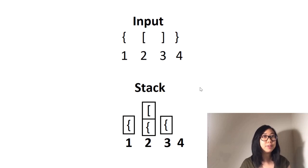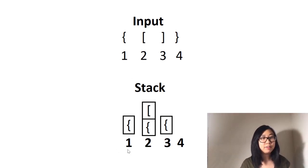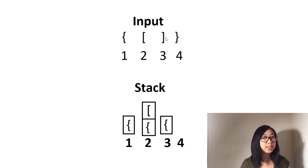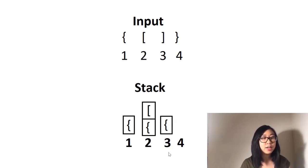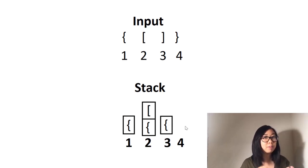A stack data structure is basically a list where the last item that was put into the stack will be the first item that gets returned. So if the string is an opening character we will add that to our stack. And if the string is a closing character we will pop our current stack, see if the character in the popped stack and the character in our input match. If they match, the string is still valid; if they don't match, it is not valid and we return false. If it's still valid we look at all the other items and do the same thing. In the end, if the stack is empty our string is valid because all opening strings got matched with closing strings.